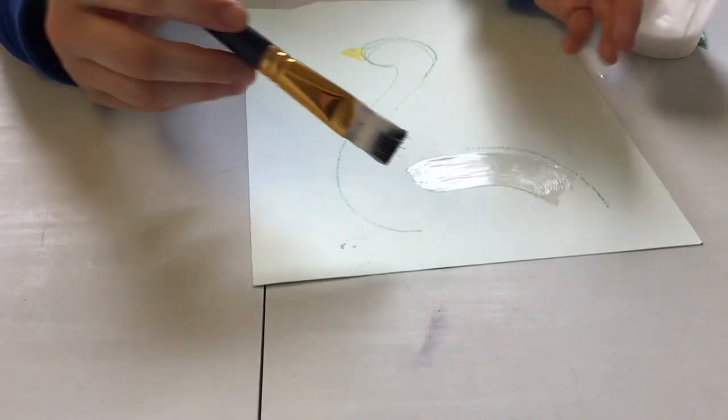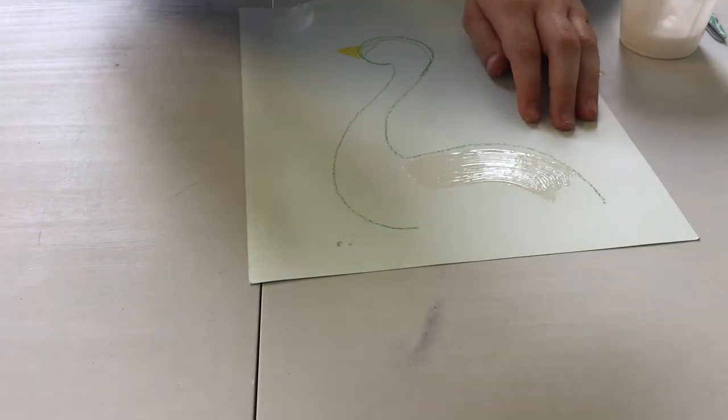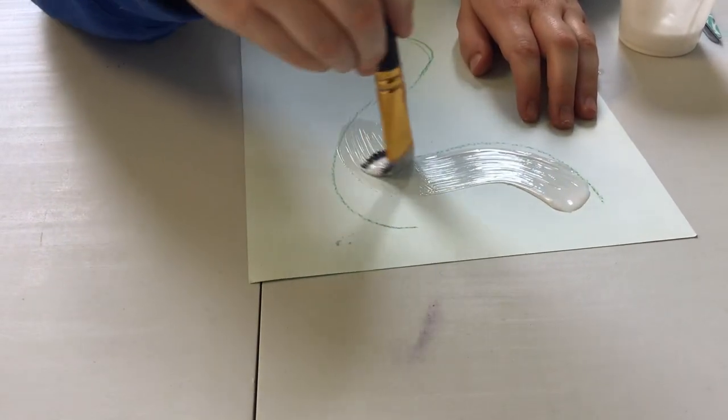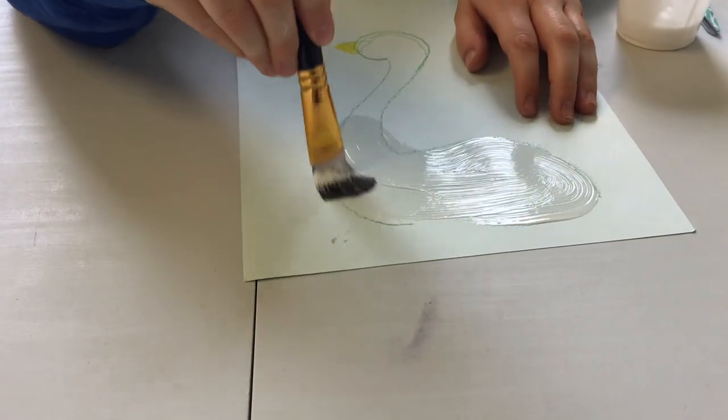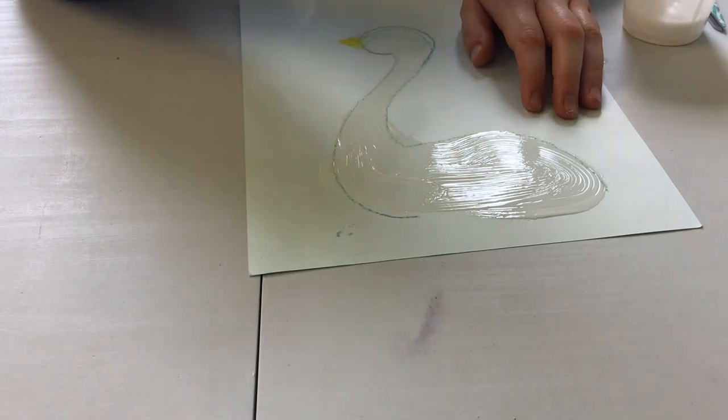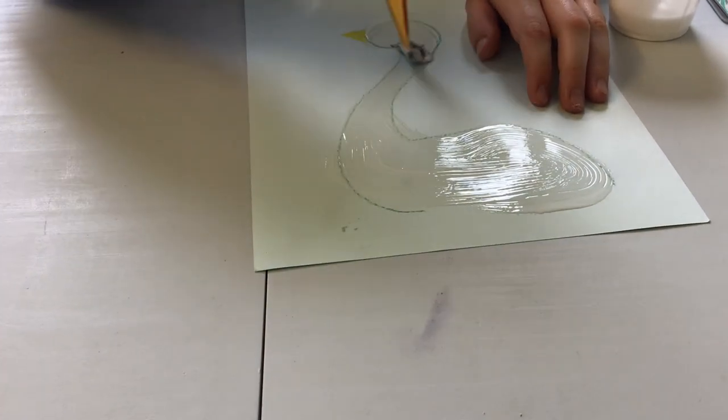So once you're done drawing the outline, you just take your glue and I'm using an old paintbrush that I don't mind throwing away because it's going to get really yucky. But you guys can use popsicle sticks too, that can work. And you're just going to cover your goose like this and make sure all the parts are covered.